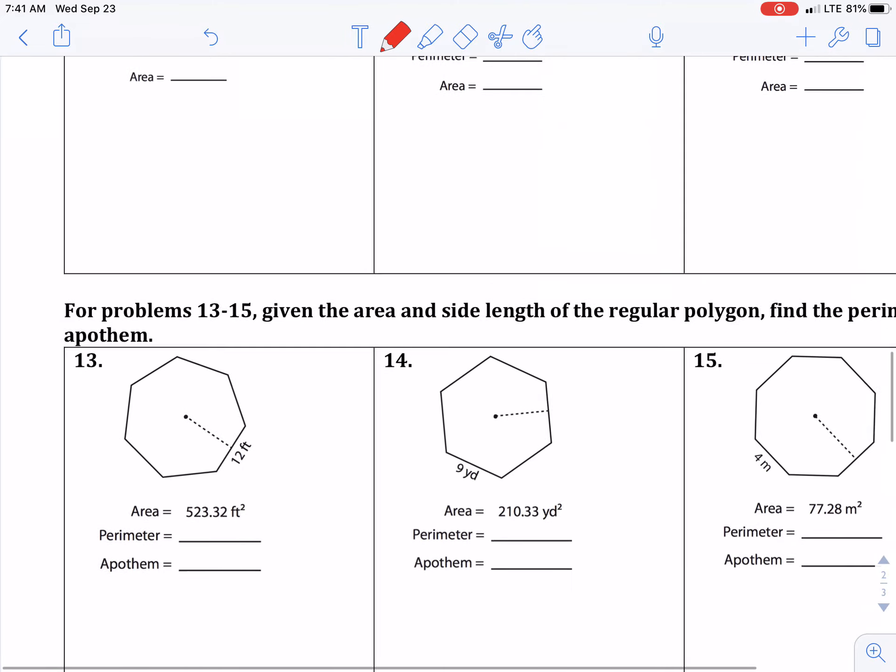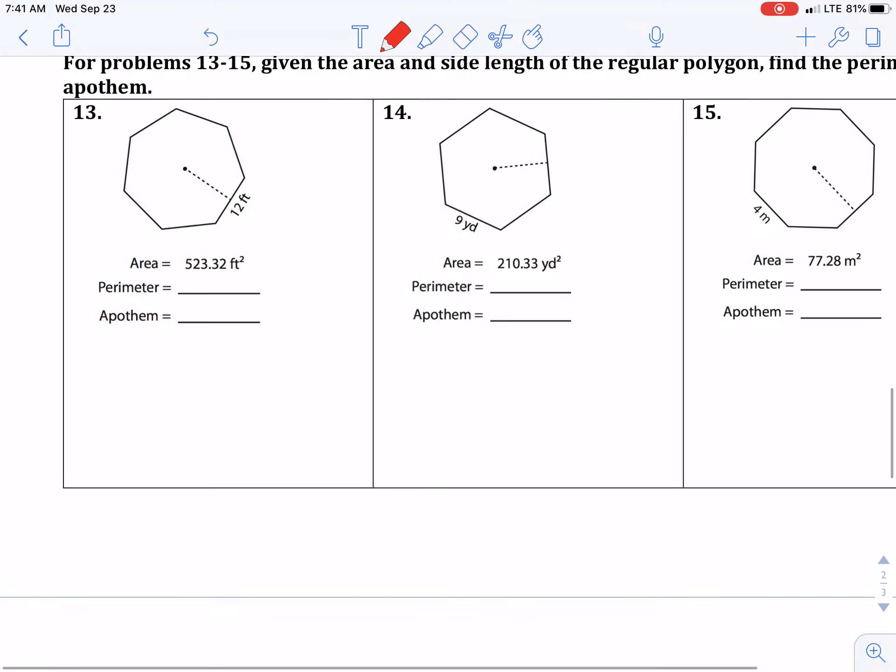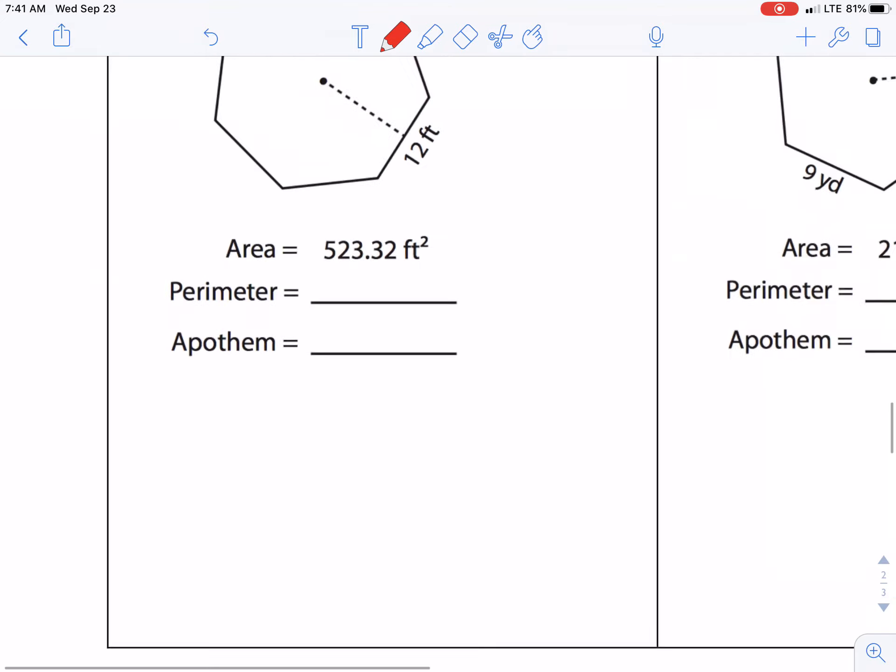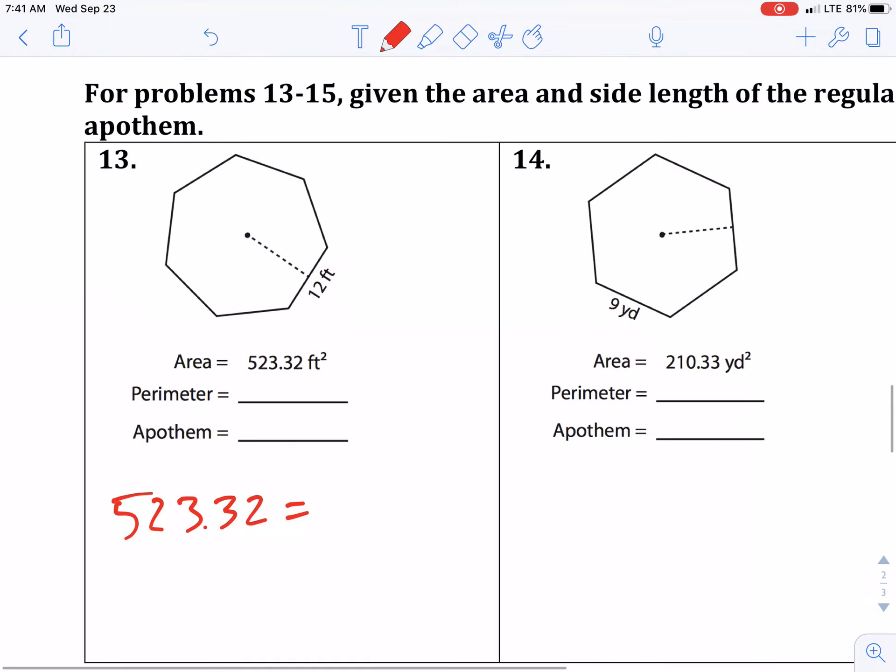All right, then we get down to the end, and the last three are given the area, work backwards, and find the missing information. Okay, well they give us area is 523.32. We don't know the apothem, but we could find the perimeter.